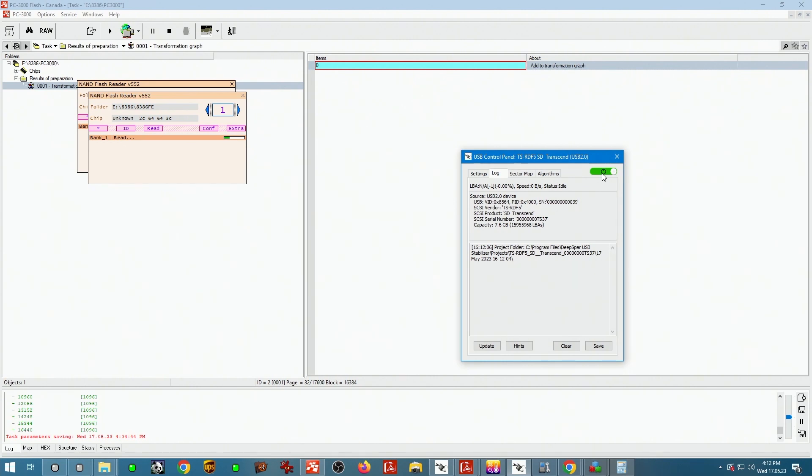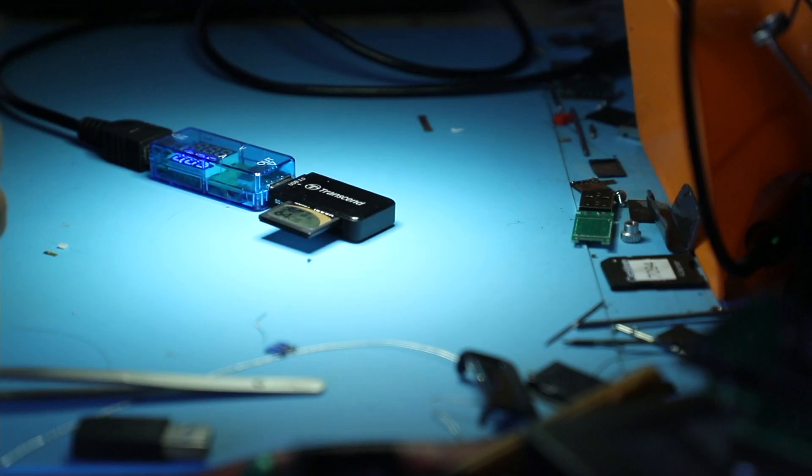I knew that because that's how the controller of this card gets recognized when the NAND is disconnected. So chances are the board is fine, it just has a physical break between the NAND and the board. Can this be fixed? Absolutely.